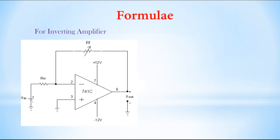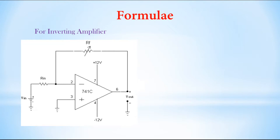First, in the case of an inverting amplifier, we give input to the inverting terminal represented by number 2. The non-inverting terminal, represented by plus, is grounded. This operational amplifier 741C is connected to a 12-volt dual power supply. We look at the output voltage at terminal 6 with respect to ground. RF is the feedback resistor, R1 is the input resistor, and Vin is the input voltage, which may be an AC signal or DC voltage.